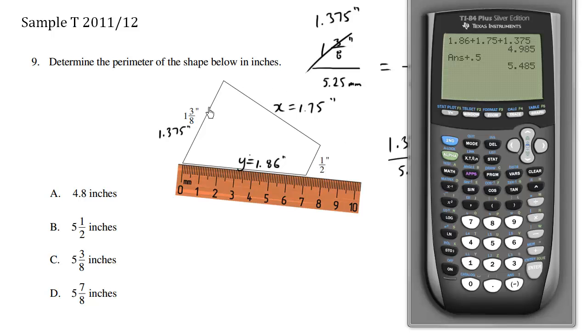So we finally add up all our four lengths, 1.375 plus 1.86 plus 0.5 plus 1.75 inches. And our total perimeter is approximately 5.5 inches. That's what we have, 5.485 which is approximately 5.5. And the only answer pretty close to that is choice B. So B is our final answer.